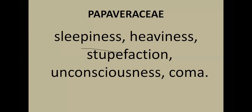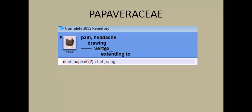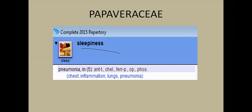Moving further, there is a second group of rubrics. 'Head pain drawing, vertex extending to nape of neck' has only two remedies, both from Papaveraceae. 'Sleepiness in pneumonia' — where there is physical pathology and the patient is very sleepy — has only five remedies, two from Papaveraceae: Chelidonium and Opium. This runs parallel to the insensibility, sleepiness, and anesthesia theme we already identified.